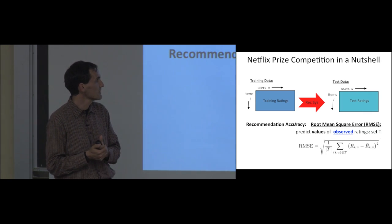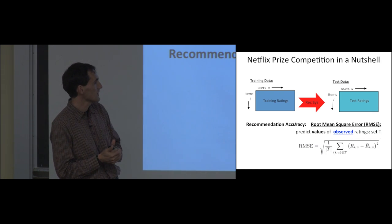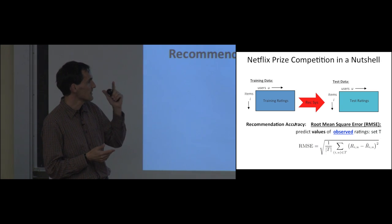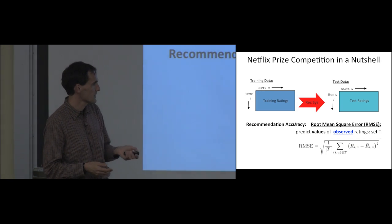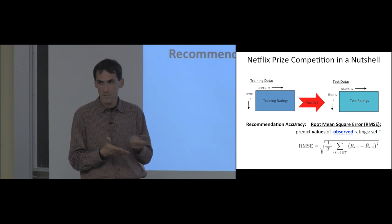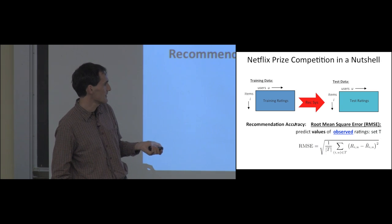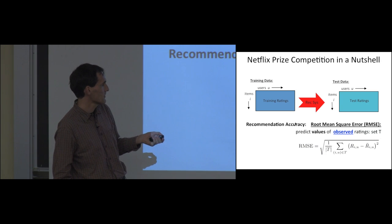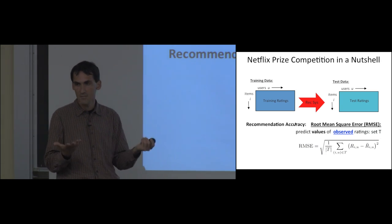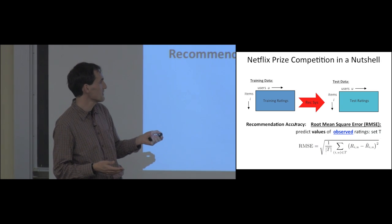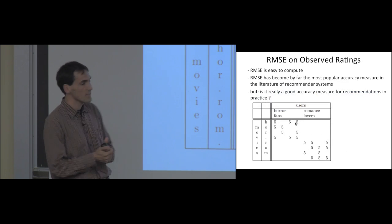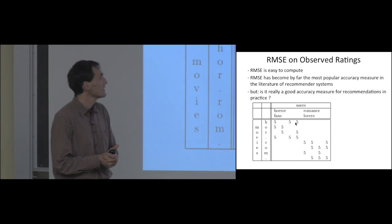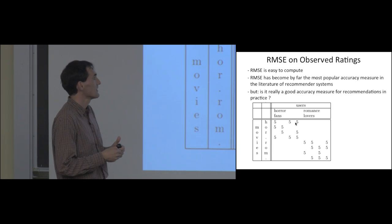Once you've built a recommender system, the last step is evaluation on test data. You take the observed rating value, subtract the predicted rating value, square it, and sum — that's the root mean squared error (RMSE). Crucially, RMSE is only computed on the observed rating values in the test set. This became by far the most popular accuracy metric in recommender systems literature. But now I want to show that it might not actually be a very good measure.